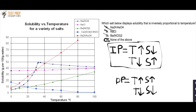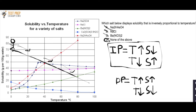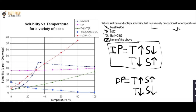D is the correct answer. You might wonder what an inversely proportional line would look like — it would be a line going downhill from left to right, so that as temperature increases, solubility decreases. But out of choices A, B, and C, none of them display an inversely proportional relationship. This comes down to understanding how to read graphs and knowing what inversely proportional and directly proportional mean.